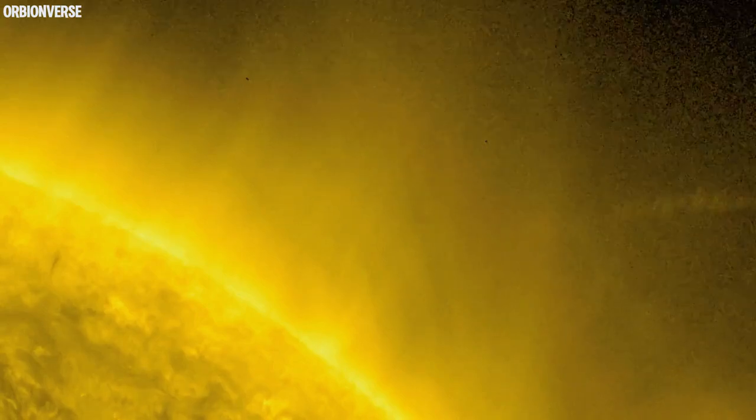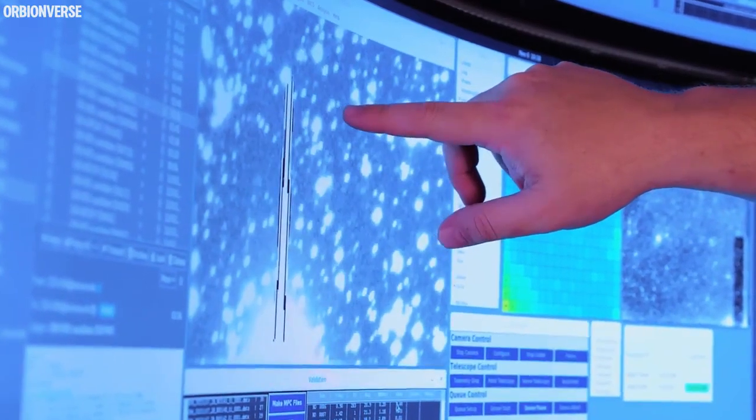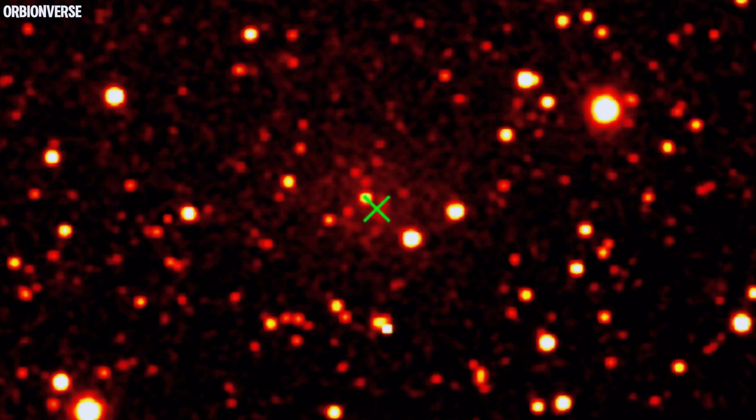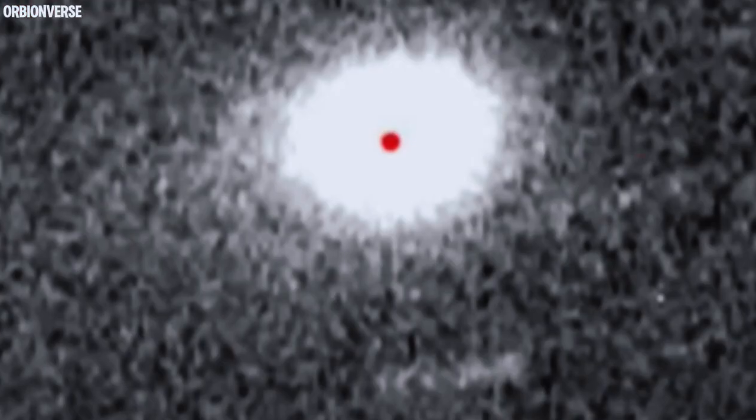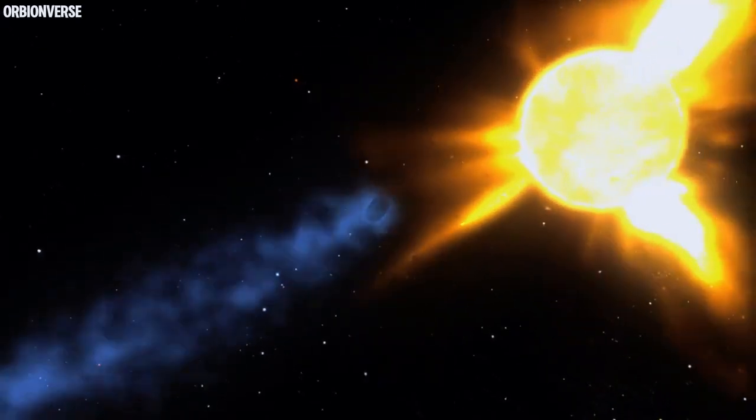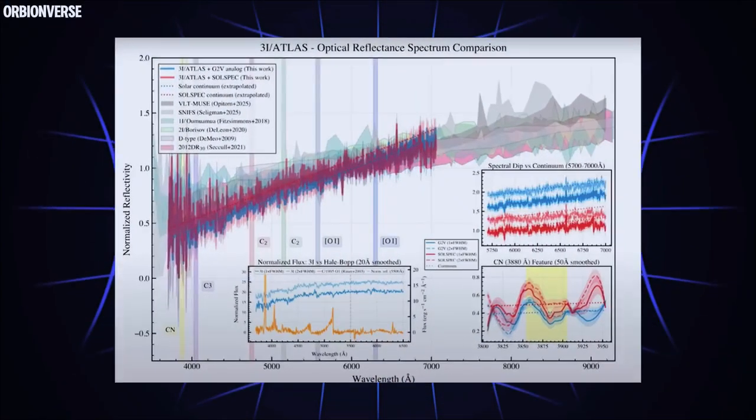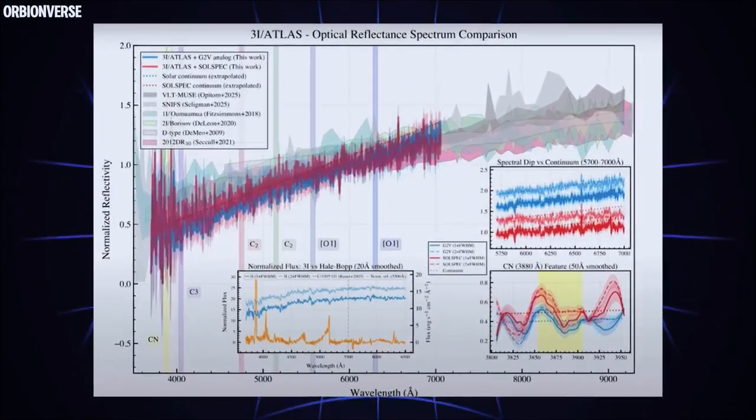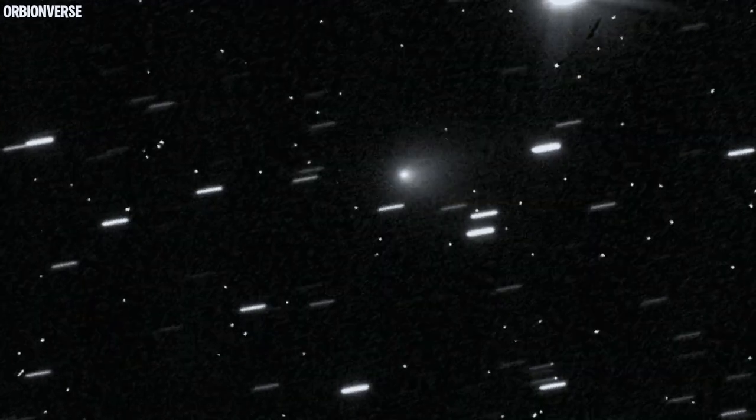And then came the light. Telescopes picked up unexpected flashes near the comet—bursts of energy that lasted only seconds, like cosmic heartbeats. Some thought it was outgassing, ice turning into vapor. But the frequency, the rhythm, was unnatural. Every flare came at a perfect interval, almost like a signal.